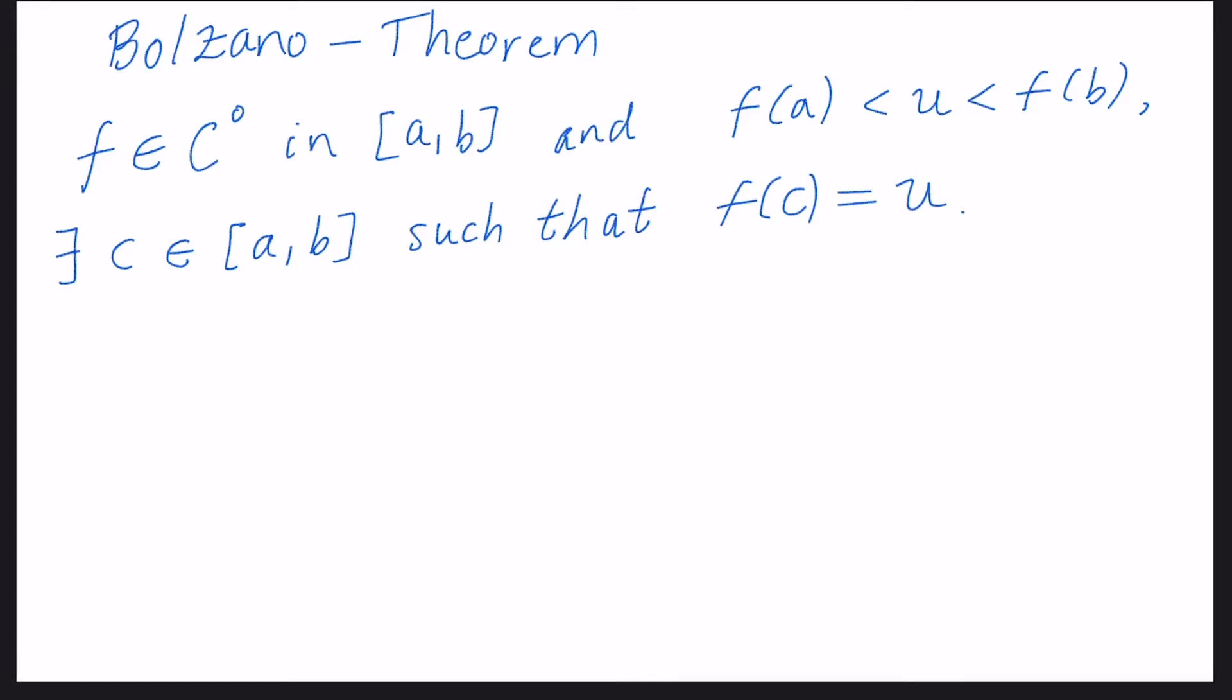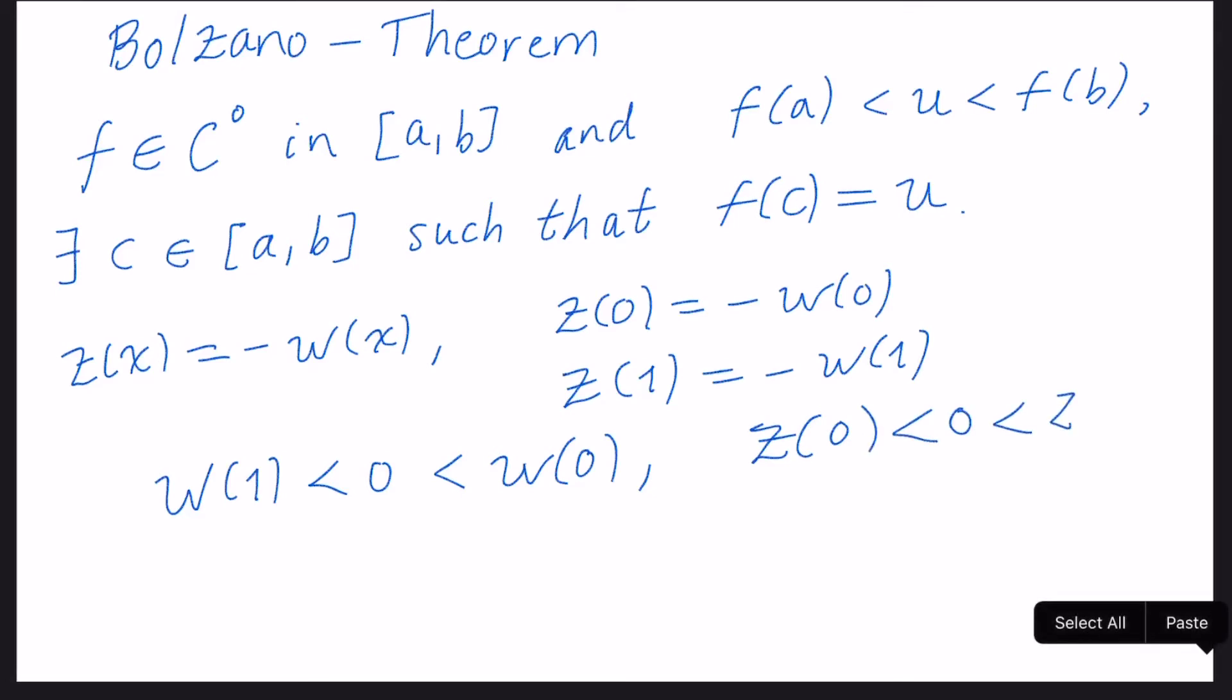Here we can consider a new function as minus w(x). So we know that this is minus w(0) and we have this too, this is minus w(1). So our old inequality w(1) is less than 0, less than w(0), is equivalent to 0 is less than -w(1), less than -w(0). And of course, minus w(x) is a continuous function as well. So we can apply Bolzano theorem in this situation too.